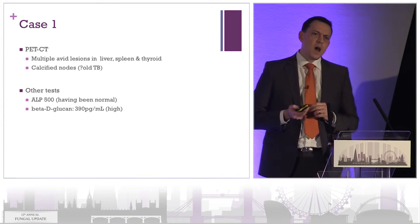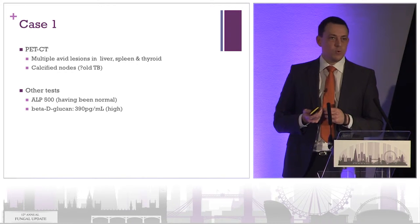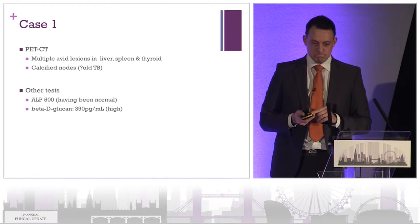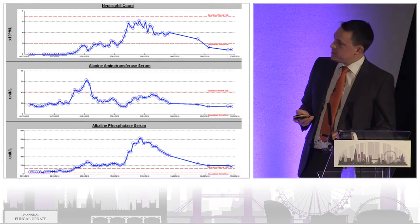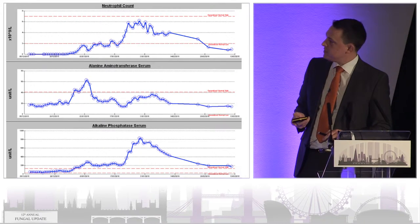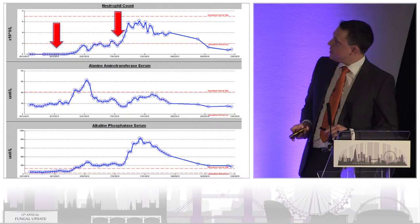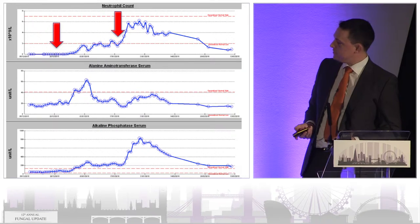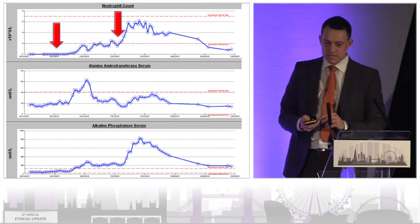Other tests of interest: he had a very high alkaline phosphatase, having been normal before, and a quite high beta-D-glucan at 390. This is just an interesting set of numbers — when he starts his chemotherapy his counts become completely flat, this is when he has his enterococcal bacteraemia with neutropenia and mucositis, and this is when his counts recover, his fever begins and his alkaline phosphatase begins to rise.